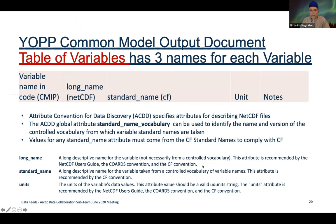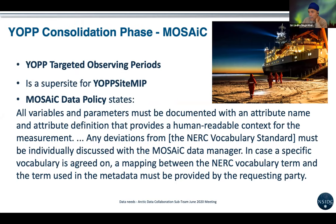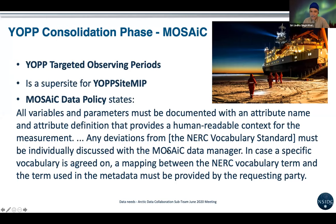Those are the three naming types we discussed. MOSAiC is going to be a super site. MOSAiC stated that all variables and parameters must be documented with a name and a definition, and you are to use the NERC standard vocabulary. If you want to use something else, you must discuss it with the MOSAiC data manager.